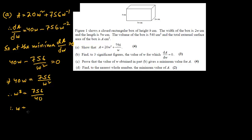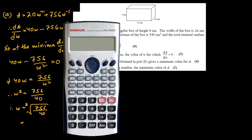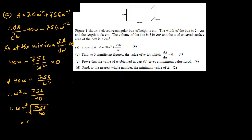Therefore, W = cube root of (756/40), which equals cube root of (756/40). This works out to 2.6637, so the answer is W = 2.66 (to 3 significant figures). This was question B.